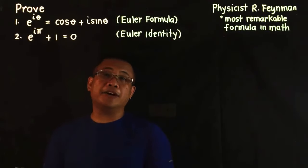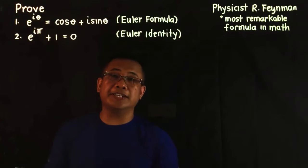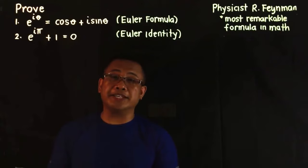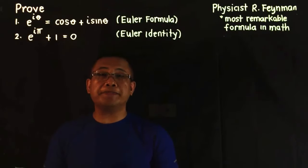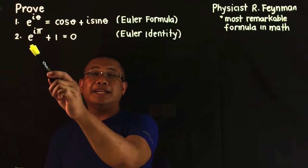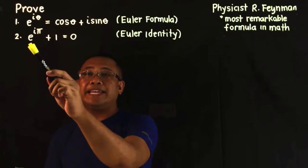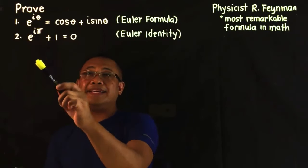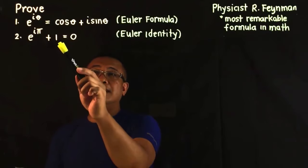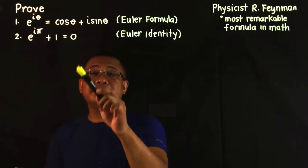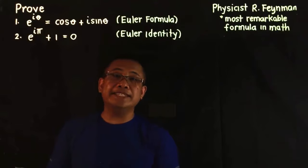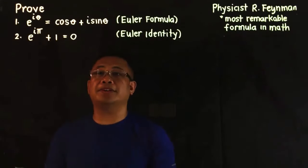This second formula is often considered the most beautiful formula in mathematics because the 5 most popular constants in math — namely the natural number e, the imaginary unit i, the constant pi, the constant 1, and the constant 0 — are all tied together in just one formula.